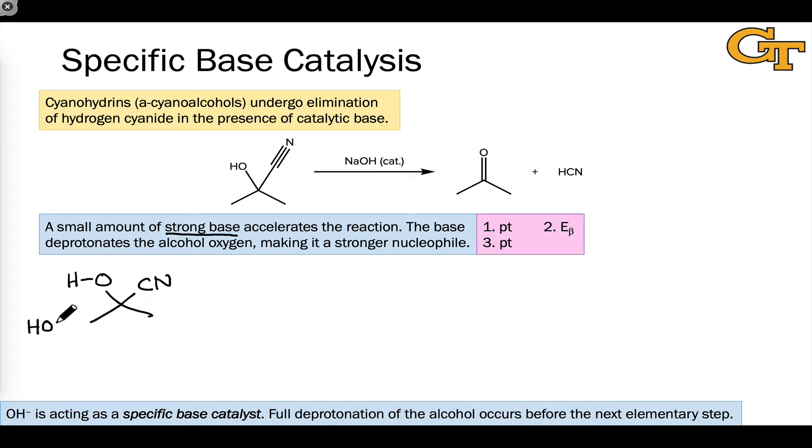And that's exactly what happens in this specific base catalyzed elimination. In the first step, hydroxide deprotonates the atom that's going to serve as the nucleophile, or electron source, in the beta elimination, and that's the oxygen.